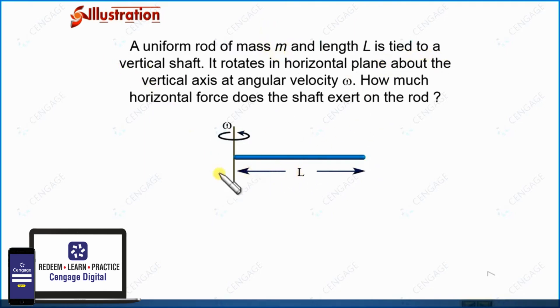It is tied to a vertical shaft. This is the vertical shaft and it can rotate in the horizontal plane about this vertical axis with angular velocity omega.